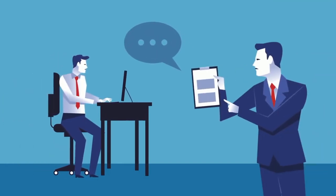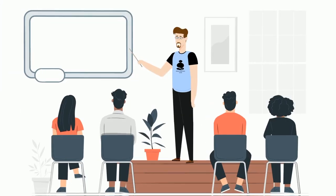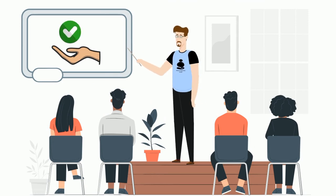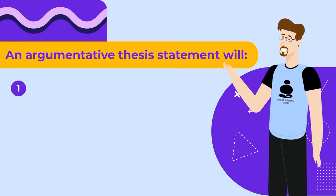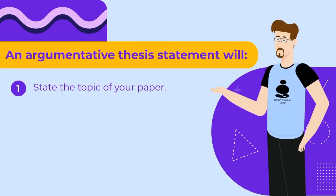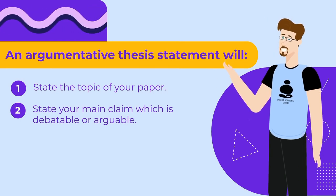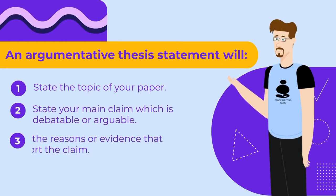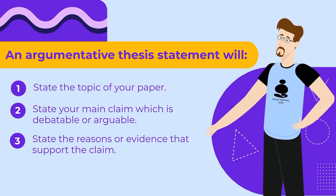A: Argumentative thesis statement. An argumentative thesis statement makes a claim that has to be argued. Your goal is to convince the audience that the claim is true based on the evidence provided. An argumentative thesis statement will: one, state the topic of your paper; two, state your main claim, which is debatable or arguable; three, state the reasons or evidence that support the claim.